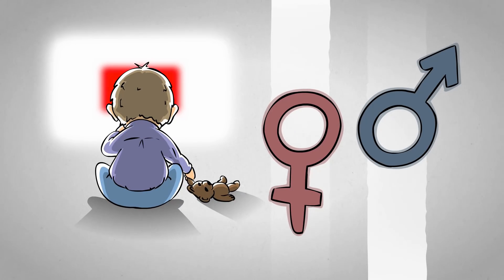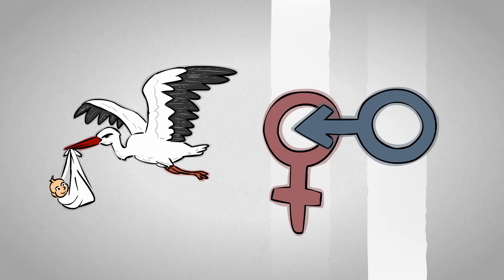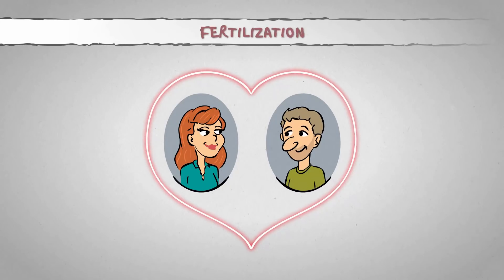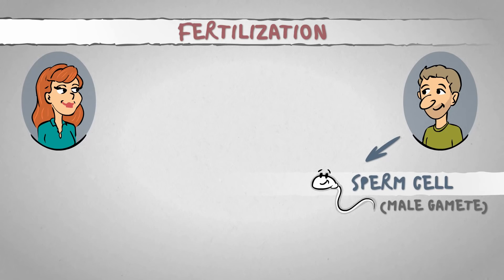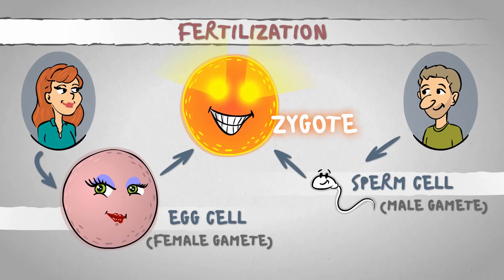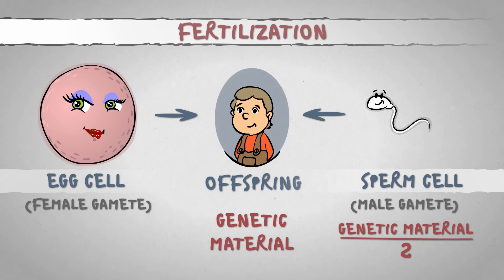I know children may be watching this video, so obviously babies come from storks, but for that to happen, mom and dad must have sex. As a result of mating, one sperm cell of the male will fuse with one egg of the female, creating a fertilized egg or zygote which will develop into the offspring. Half of the genetic material of the offspring comes from the sperm, the other half from the egg.